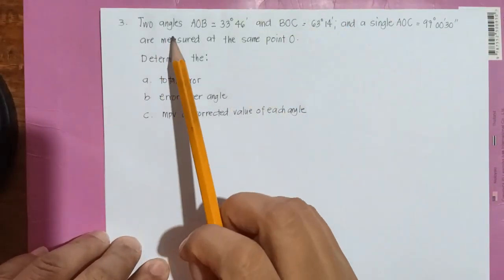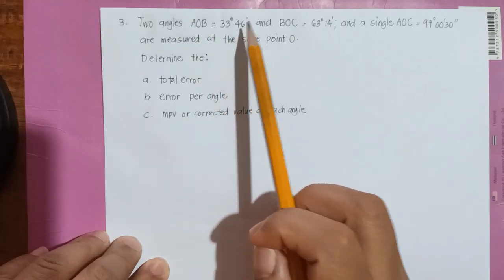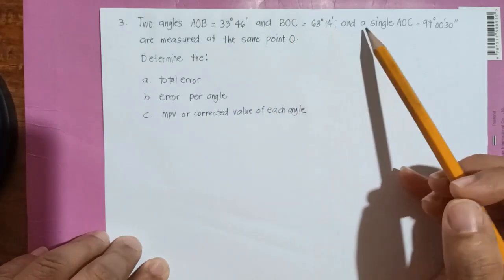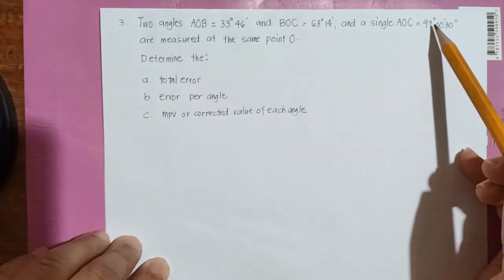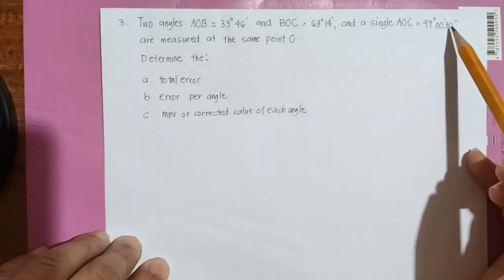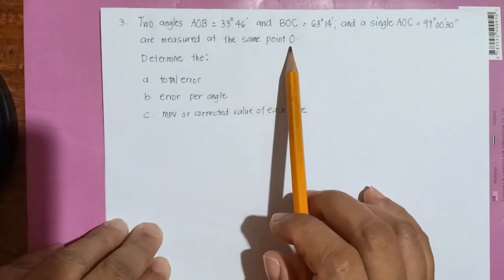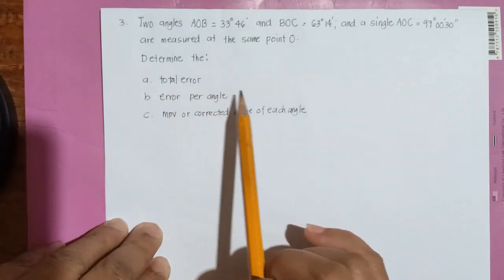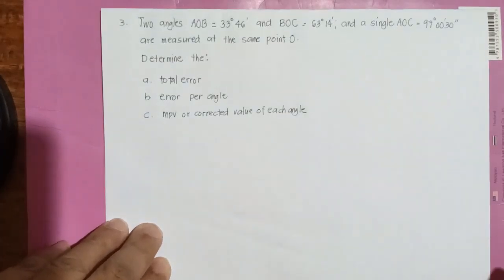Example number three. Two angles: angle AOB measured 33 degrees 46 minutes, and angle BOC measured 63 degrees 14 minutes. A single angle AOC is also measured, which is equal to 97 degrees 0 minutes and 30 seconds. These are the angles measured at the same point O. Determine the total error, error per angle, and most probable value or corrected value of each angle.